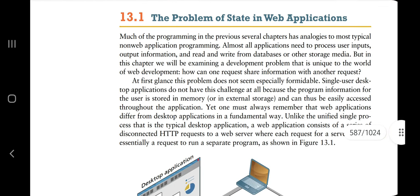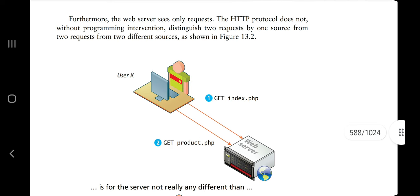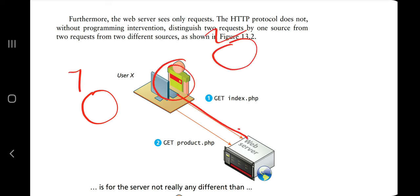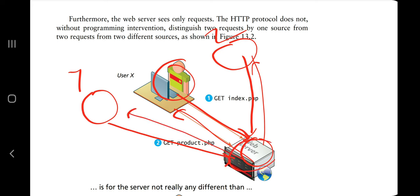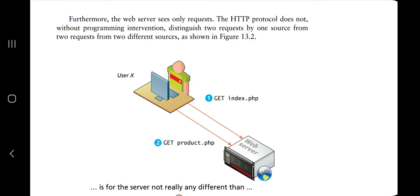The main problem in web application state is this: suppose there are three users — User X, User Y, and User Z. Each sends a request and gets an answer, but the browser does not know whether it's coming from three different people or from the same person sending three times. That distinction is not defined — that is the problem of state in web applications.